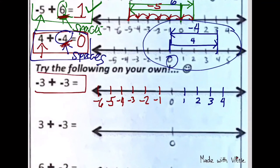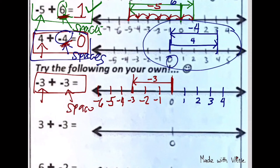For negative 3 plus negative 3: the first line starts from 0, goes to the left — negative 3 is the first line. Now look at the next number — that is the number of spaces we're adding, and it's negative, so we go farther to the left, three more spaces. So we extend the line three more spaces. It stopped at negative 6 — negative 3 plus negative 3 gives you negative 6.